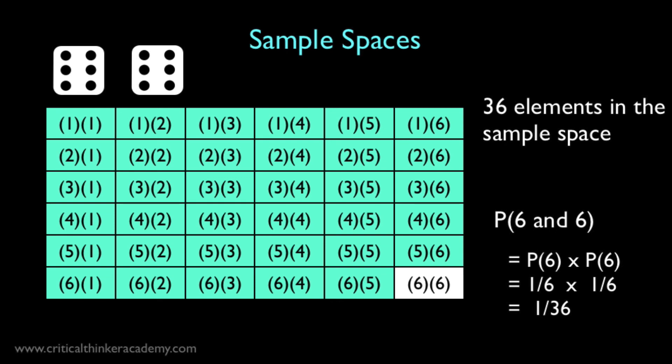Here's the sample space for rolling two dice. There are 36 possible outcomes. The probability of rolling two sixes is one in six times one in six, or one in 36.